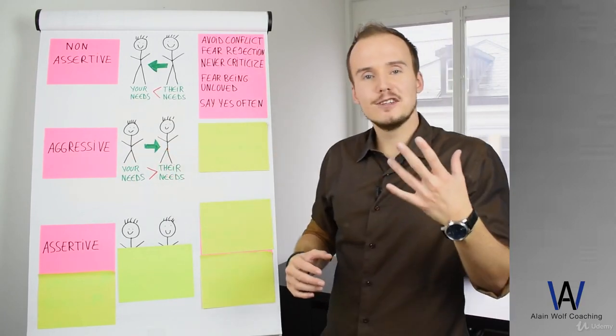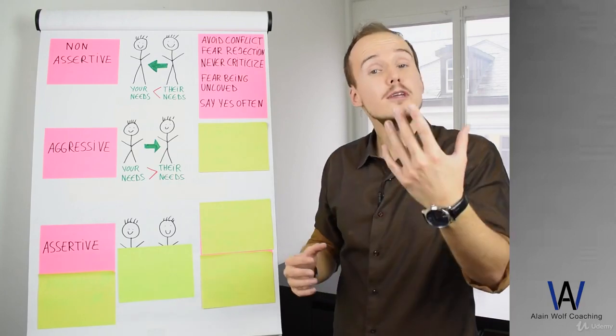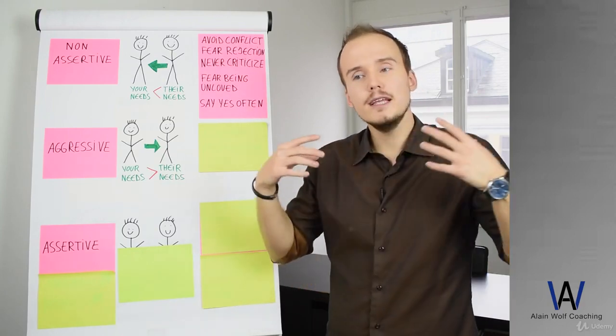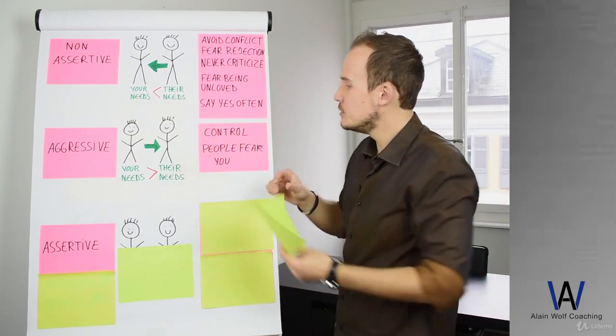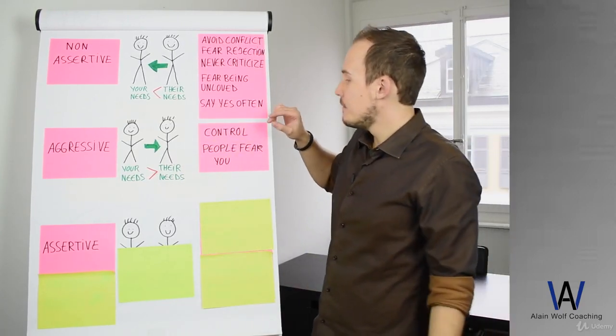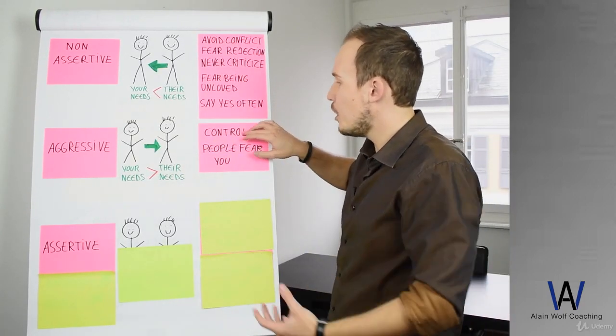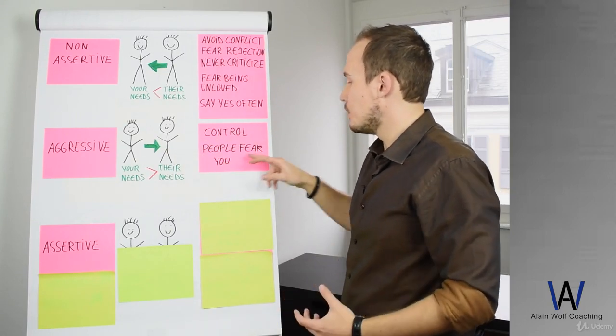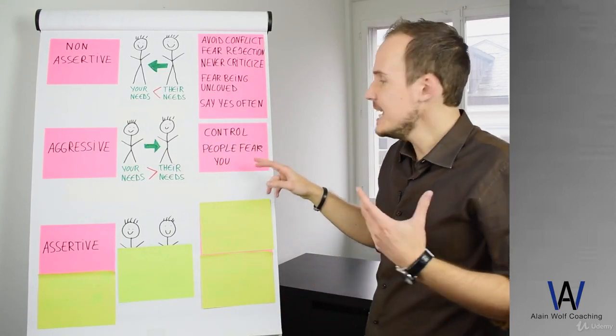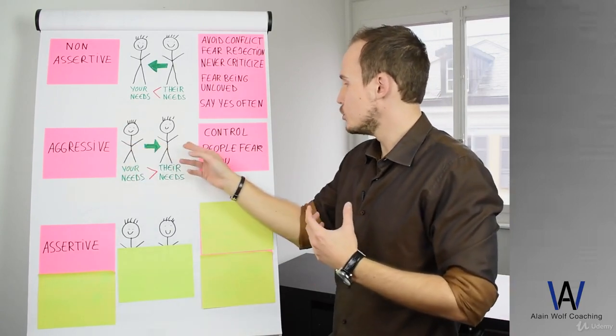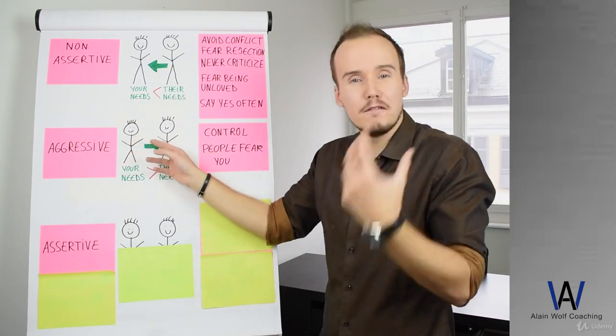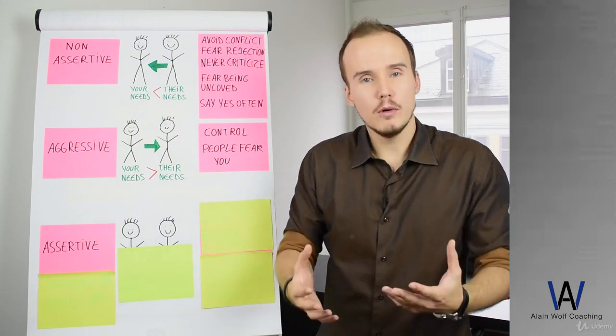I'm sure that you have someone in this situation, maybe you that is watching this video, or maybe you know someone around you that communicates like that. What they will do is that they will try to have control over other people and people will fear you. You may say yes, but sometimes it's great to yell at people or really to try to control people or to make people fear you because then they will do what you want.